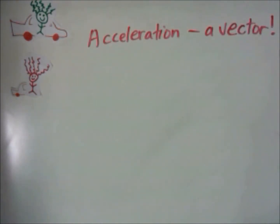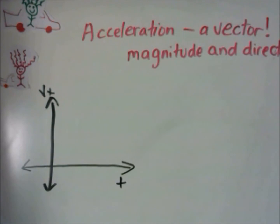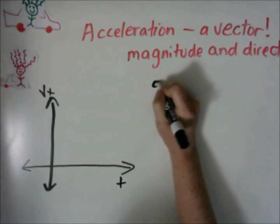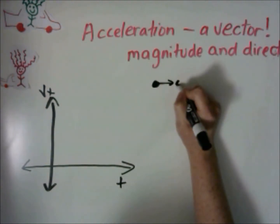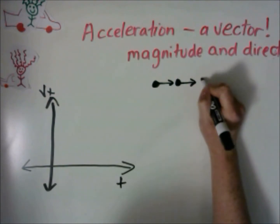Note that acceleration is a vector — it has a magnitude and direction. Let's talk about some specific examples of acceleration. Let's say an object is moving to the right and speeding up. Its motion diagram looks like this.